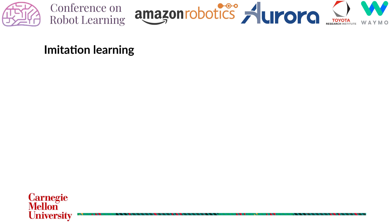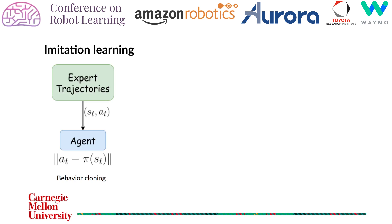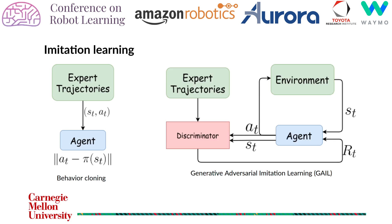In imitation learning, the agent may or may not use the environment dynamics. For example, in behavior cloning the agent simply tries to map states to actions without interacting with the environment. In GAIL, the agent interacts with the environment and a discriminator classifies between an expert trajectory and an agent trajectory. The reward is given to the agent based on if the discriminator is able to classify the agent from the expert.